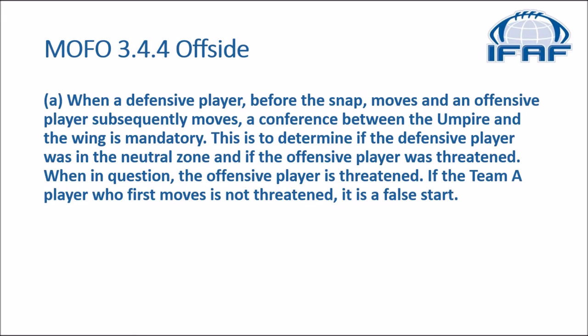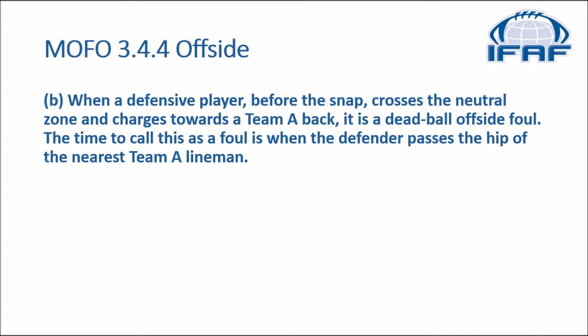In the MOFO we go to section 344 dealing with offsides. A) When a defensive player before the snap moves and an offensive player subsequently moves, a conference between the umpire and the wing is mandatory. This is to determine if the defensive player was in the neutral zone and if the offensive player was threatened. When in question, the offensive player is threatened. If the team A player who first moved is not threatened, it is a false start. B) When a defensive player before the snap crosses the neutral zone and charges towards a team A back, it is a dead-ball offside foul. The time to call this foul is when the defender passes the hip of the nearest team A lineman.